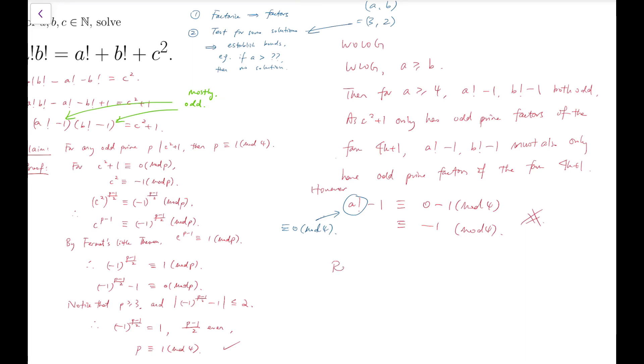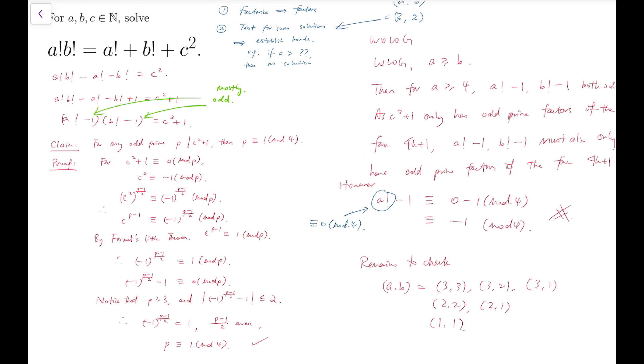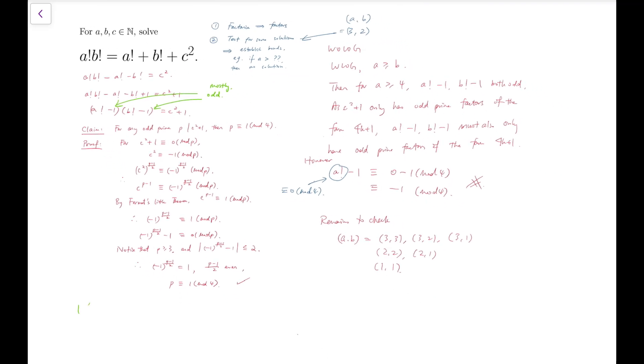And it remains to check the case that a and b are (3,3), (3,2), (3,1), (2,2), (2,1), and (1,1). Six cases remaining. One more thing is that we cannot have any of a or b to be 1, because if that happens, if a equals 1, then b! = 1 + b! + c², and then c² + 1 equals 0. So that's clearly a contradiction, or I should say no solution, and similar for b equals 1. So I'm going to remove these three cases, so we only check the other three.